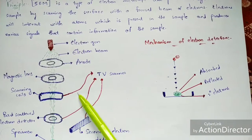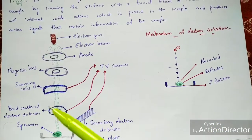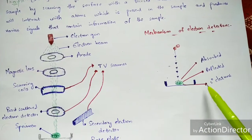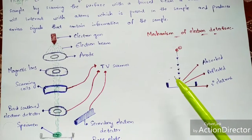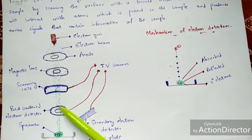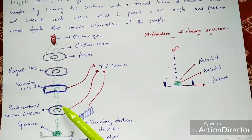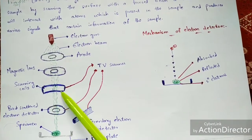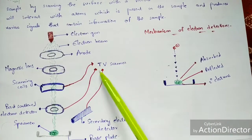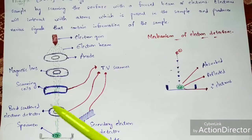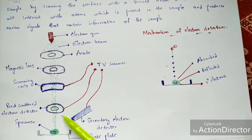The absorbed electrons will be detected by the scanning coils, the reflected electrons will be detected by the backscattered electron detector — backscattering meaning reflecting — and the secondary electrons will be detected by the secondary electron detector. Detecting the electrons means detecting the type of image represented by the electrons, because they have passed upon the specimen. When electrons pass upon the specimen, an image is formed, and that image is detected by these three detectors, which are connected to the TV scanner where we can easily see the image.